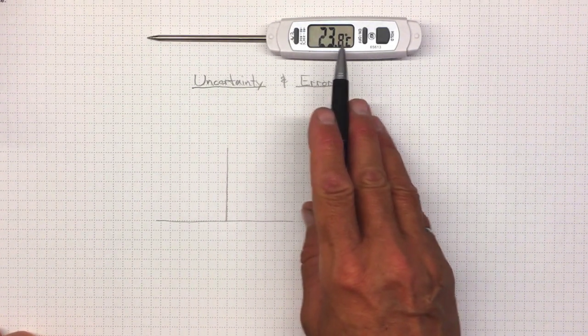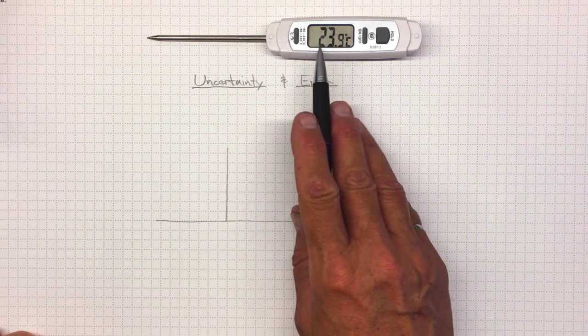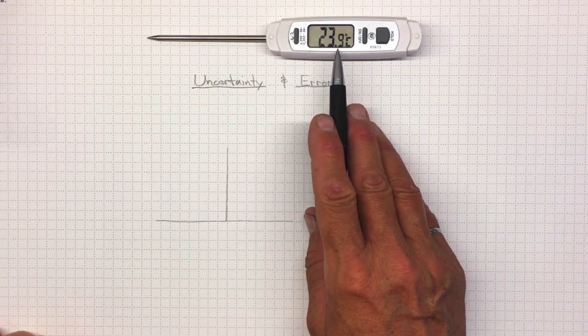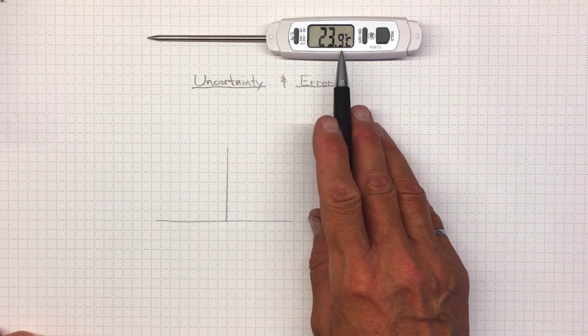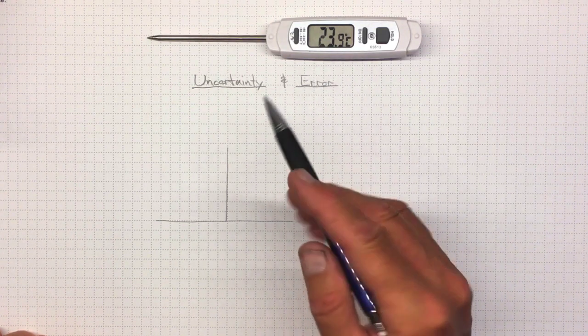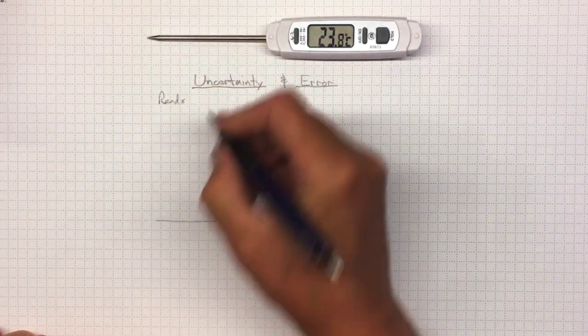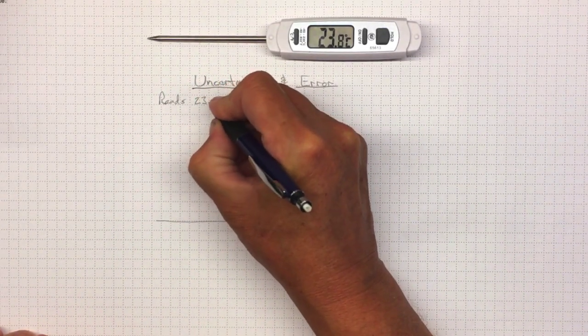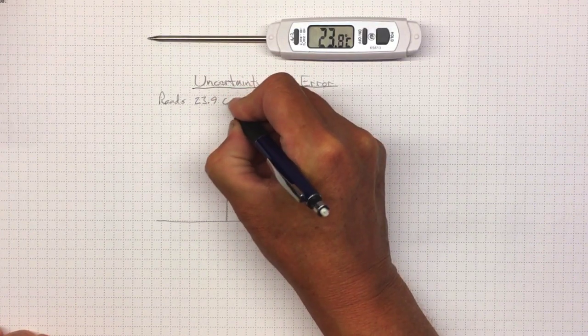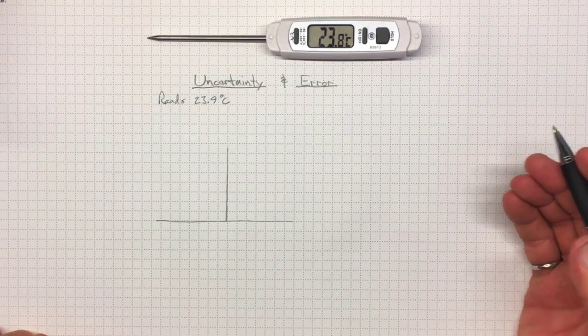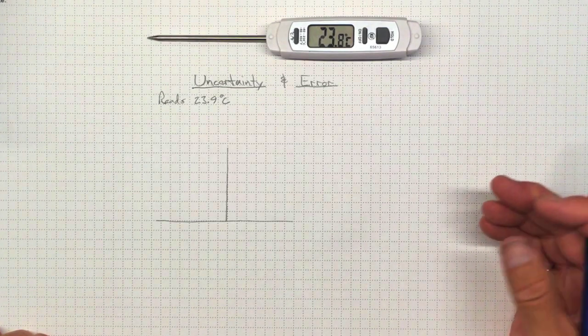So this thermometer here, I've turned it on, and it's settled into about 23.8 or 23.9 degrees Celsius as an indication of room temperature. And so we've got a reading, looks like 23.9 degrees Celsius.